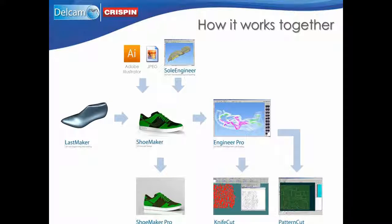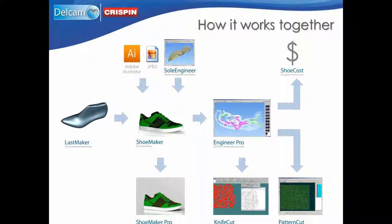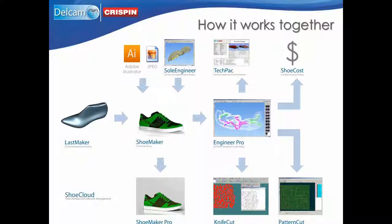You can then output to software to cut patterns or production parts quickly and easily. It's important to know how much each shoe will cost to manufacture. You can use Shoe Cost, which produces costing estimates based on how much your patterns will nest onto synthetic fabrics or leather hides for cutting. Furthermore, you can use TechPack to generate the documentation you need about the specification and manufacturing process for each shoe. There's also an integrated product lifecycle management system called Shoe Cloud integrated into all Delcam Crispin CAD products.